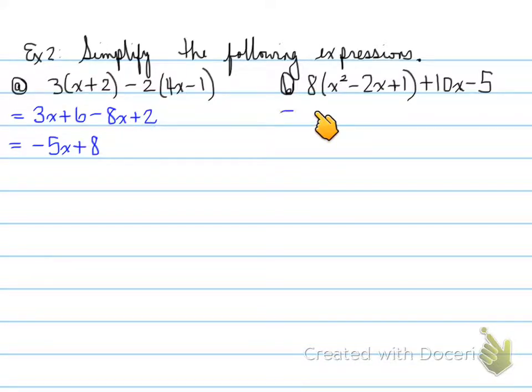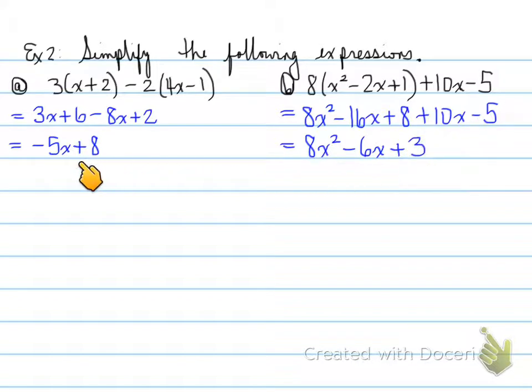Next one. We have 8x squared. And then we have the 8 times the minus 2x, which is minus 16x. We can see this. And then we have the 8 plus the 1, and that gives us plus 8. Then we have the plus 10x, and then the minus 5. So what we're going to do next on the next line is to collect any like terms. 8x squared goes first. Wonderful. Then we have the minus 16x plus 10x is going to give us minus 6x. And then plus 8 minus 5 is going to give us plus 3. Wonderful. So if we look at all of these, these are the following simplified expressions.